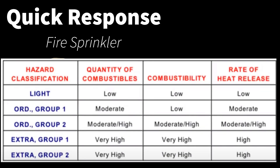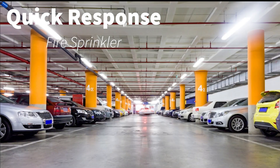When we move up to ordinary hazard, the combustible loads and rate of heat release starts to climb to moderate and high. In ordinary hazard, quick response is allowed when combustibility and rate of heat release is on the low to moderate side — for example, a parking garage. If the garage is a dry system, it will also benefit from the quick response's faster delivery time.